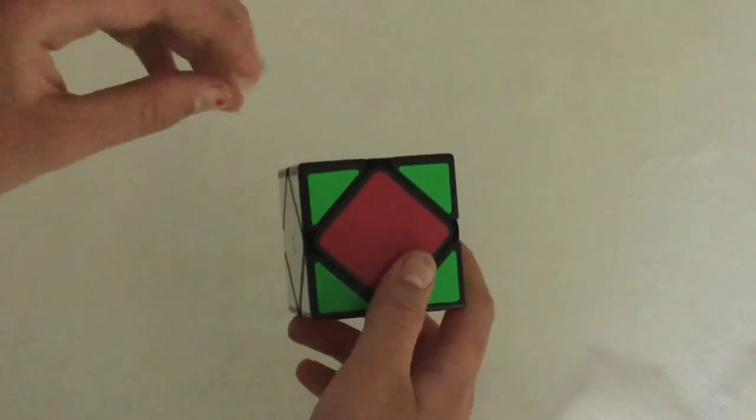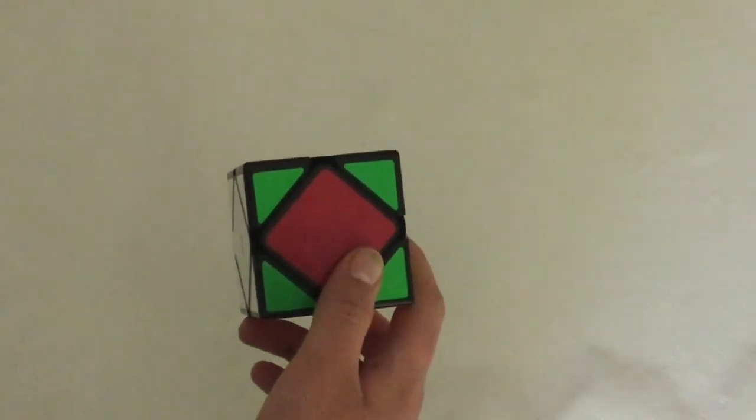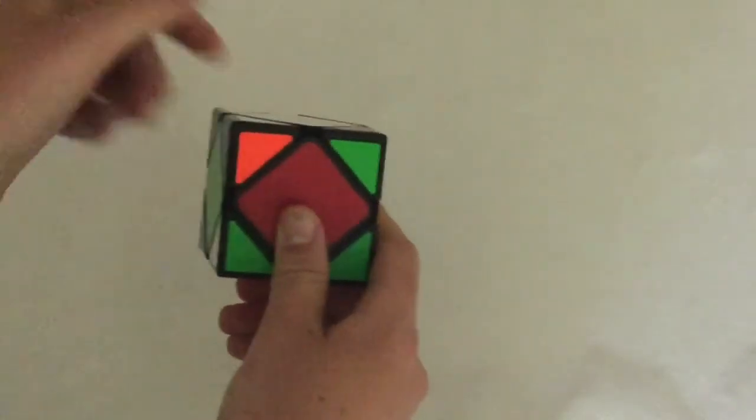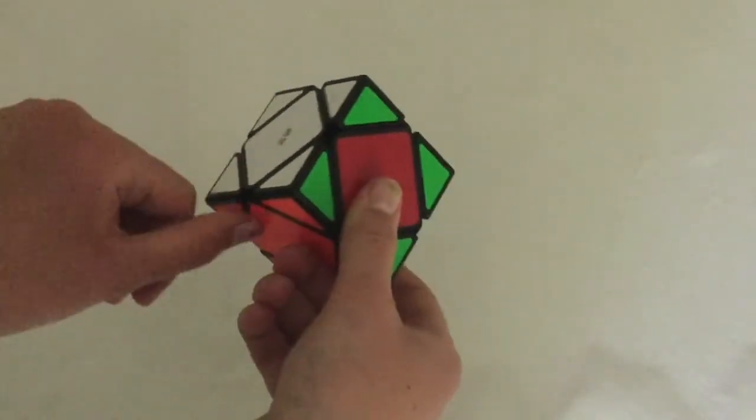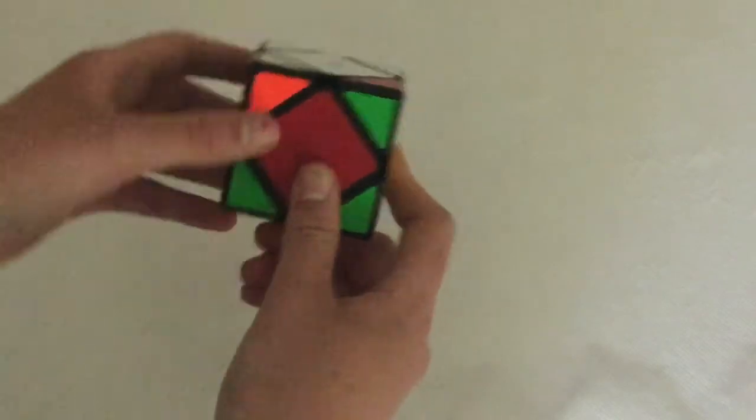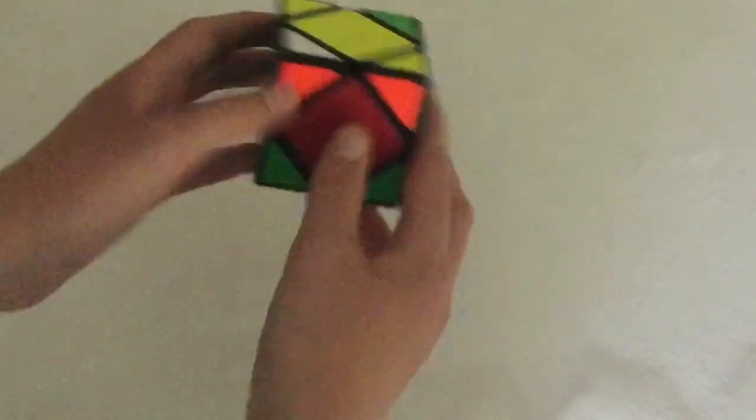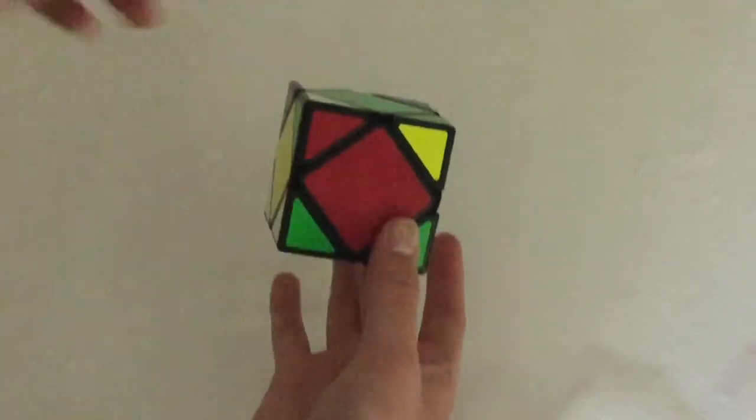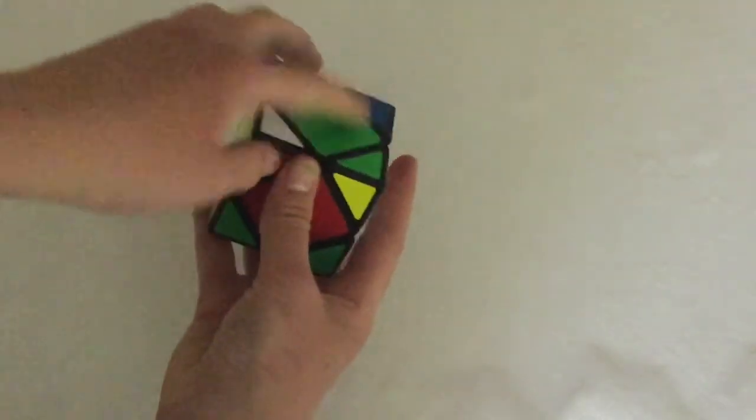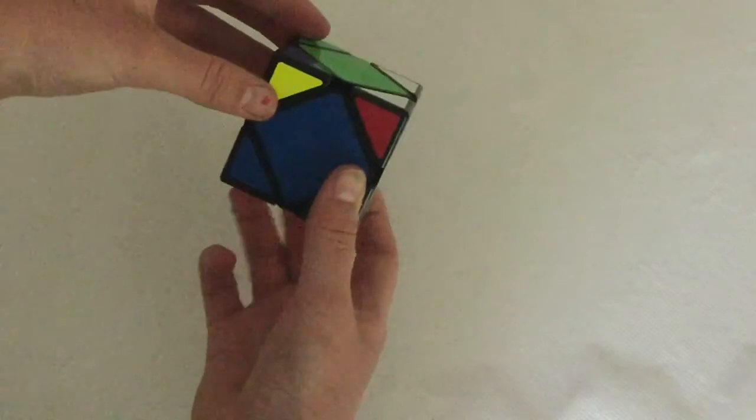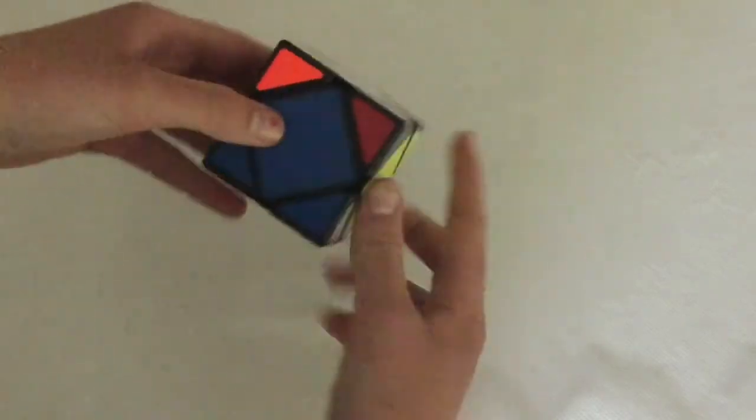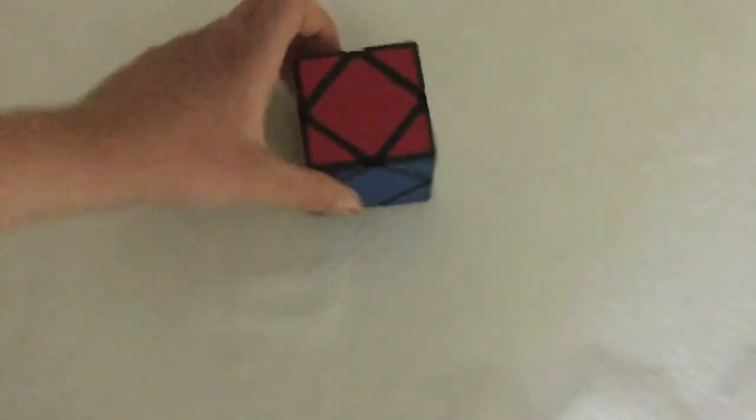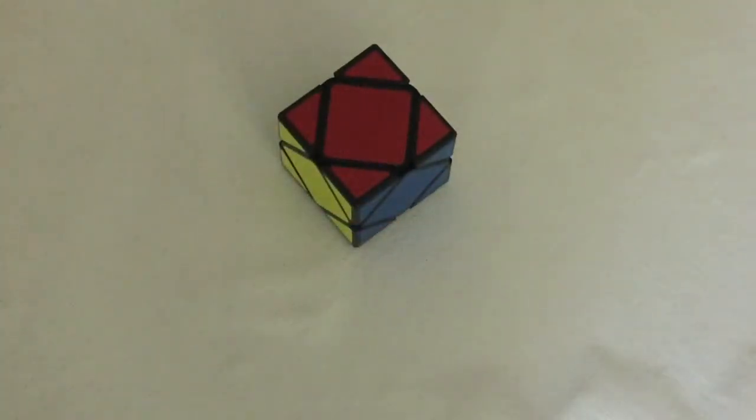What we're going to do is the same exact algorithm, but we're going to do it twice. This time instead of white, it's going to be orange. We're going to go from the back up, other side up, back down, other side down. Now we're going to rotate the cube twice and do the same thing. And there you have it—we have solved this cube.